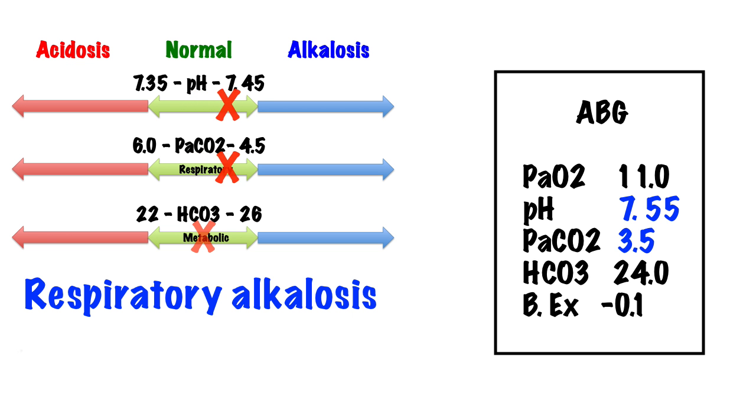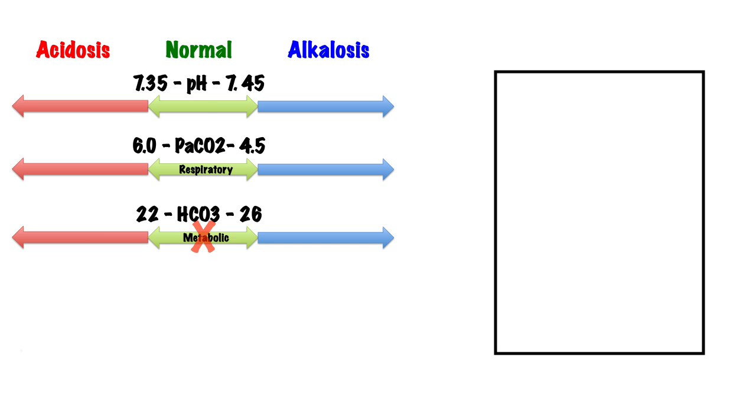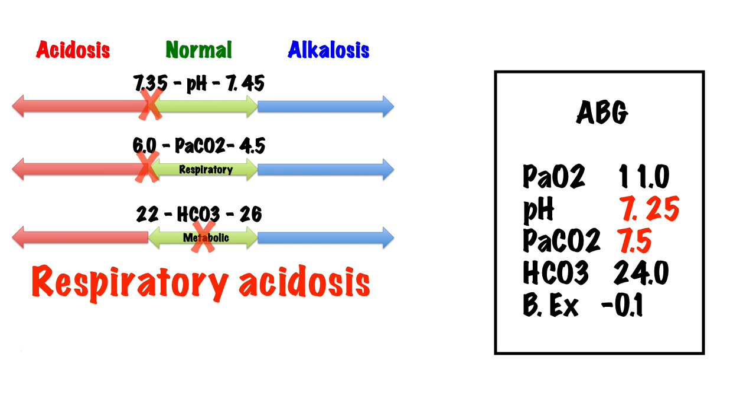If the partial pressure of carbon dioxide falls to less than approximately 4.5 due to a high respiratory rate, then this will cause an alkalosis. If the partial pressure of oxygen rises above 6.0 due to respiratory failure, then this will cause an acidosis.